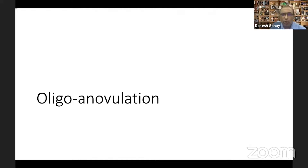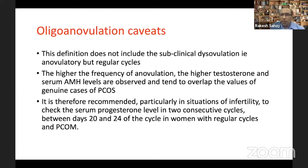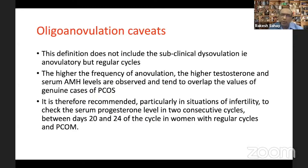Oligo-anovulation is defined as fewer than eight episodes of menses in a year, with a cycle length of more than 35 days. However, this definition does not capture subclinical disovulation — women may have regular cycles by this definition yet still be anovulatory. Higher frequency of ovulation correlates with higher testosterone and serum AMH levels. It is therefore recommended, particularly in infertility situations, to check serum progesterone levels in two consecutive cycles between the 20th and 24th day of the cycle to assess ovulation.